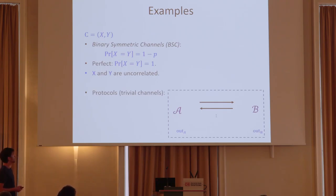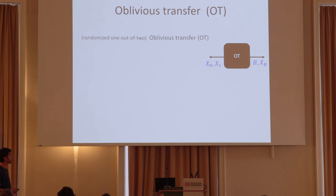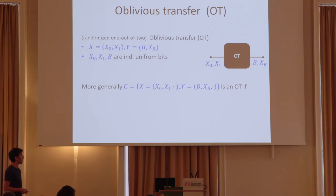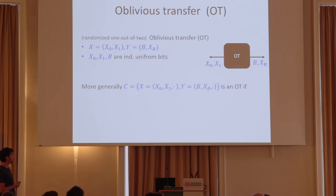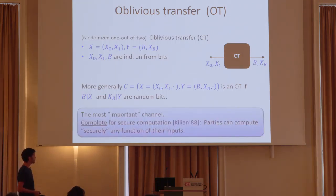Another example, maybe the most important one, is oblivious transfer. I'm going to talk about a randomized one-out-of-two OT, which is equivalent to the definition you think about. In such a channel, Alice gets two uniform independent bits X0 and X1, and Bob gets a third bit B and one of Alice's bits, XB. We want Alice to not know what B is, and Bob to not know anything about the bit he didn't get from the channel. More generally, Alice can get more information from the channel as long as B is still uniform given Alice's output. This is the most important channel because it is complete for secure computations — given access to such a channel, Alice and Bob can compute any function of their inputs securely.